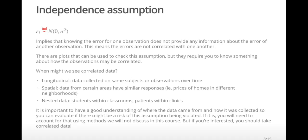Here are some common types of data that would often have correlated errors. Longitudinal data, when we collect data on the same subjects or observations over time. Spatial data, where data from certain areas have similar responses. And nested data, like students within classrooms or patients within clinics.